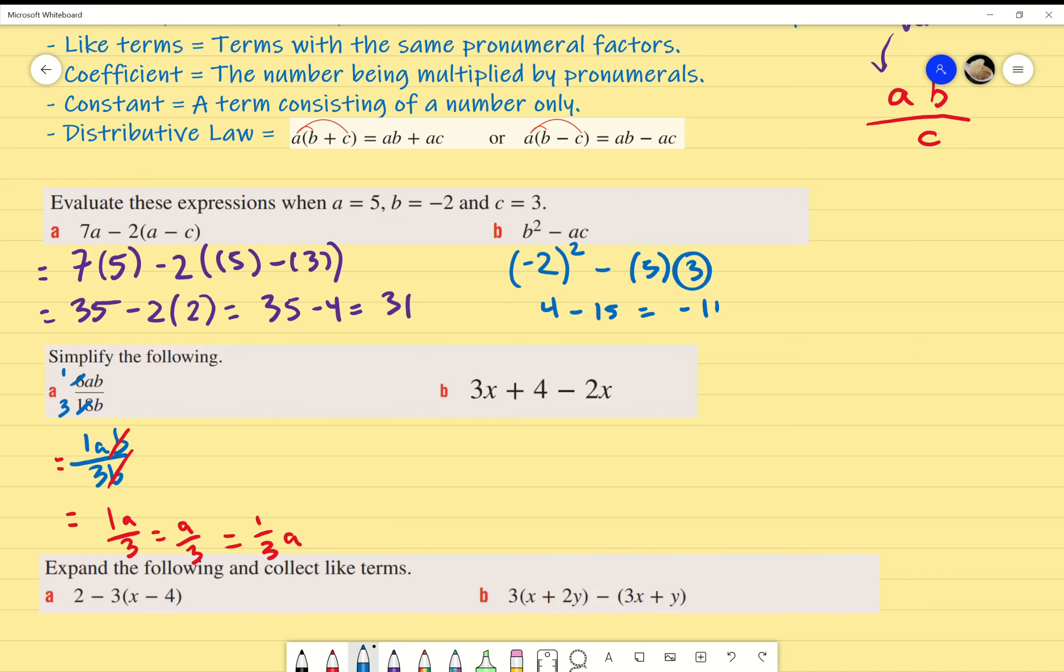3x plus 4 minus 2x. Super easy. Gather your like terms. I know 3x and negative 2x are like terms. So 3 minus 2 gives me 1x plus 4, or in other words, just x plus 4.